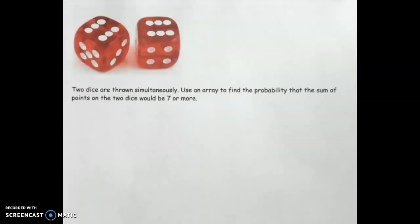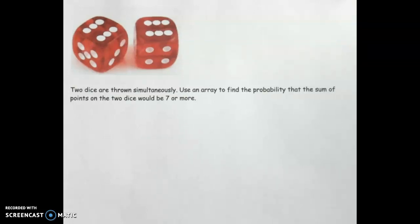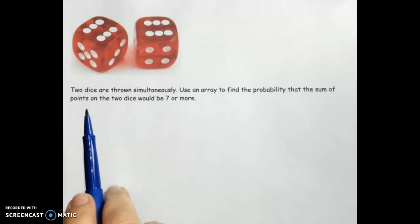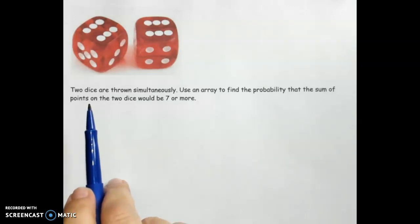Let's take a look at one more problem. This time, let's imagine we are throwing two dice. This is considered a compound event because more than one thing is happening. The first event would be throwing the first die, and the second event would be throwing the second die. Two dice are thrown simultaneously. Use an array to find the probability that the sum of the points on the two dice will be seven or more.